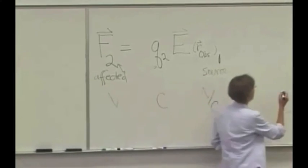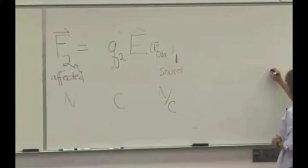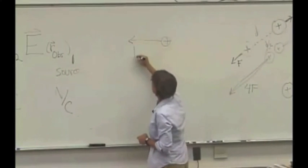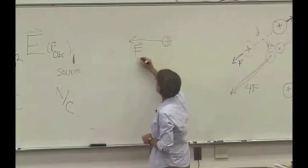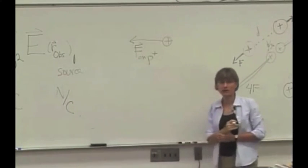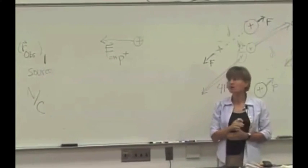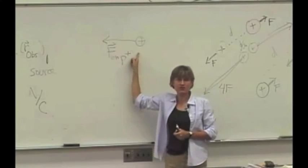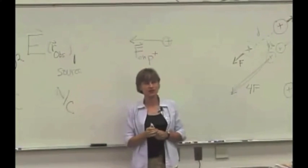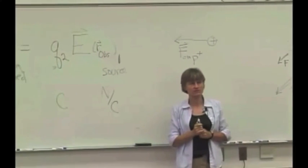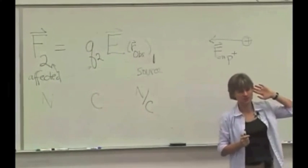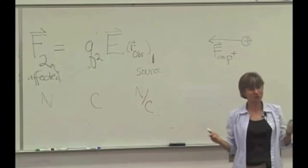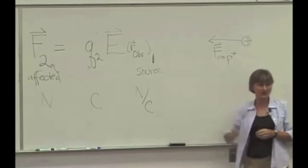We put a proton at our observation location, and we saw a force on the proton going that way, right? What do we conclude from this observation about the direction of the electric field at that observation location? Is it in the same direction? Do we know anything? Do we know the charge is positive? Well, it's a proton. We put a proton here.